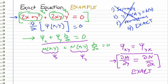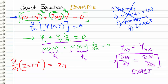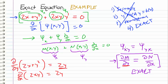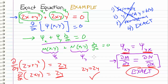The first thing we're going to do in this example is verify that this is in fact an exact differential equation. Let's take M, which is 2x plus y squared, and differentiate it with respect to y. This comes out to 2y, because 2x goes away since we treat it as a constant when differentiating with respect to y. Now let's take N, which is 2xy, and differentiate it with respect to x, which gives us 2y. So we have 2y equals 2y, and therefore our equation is exact — we can proceed with solving it.